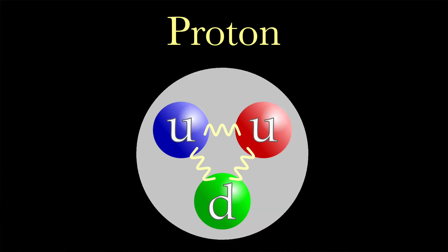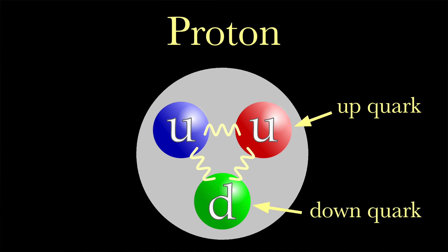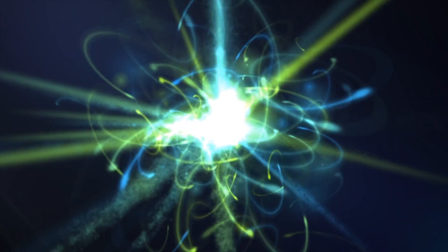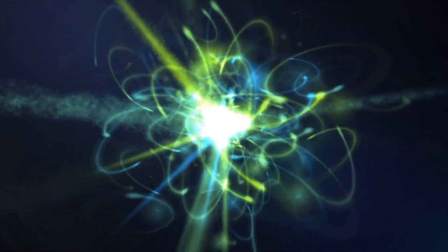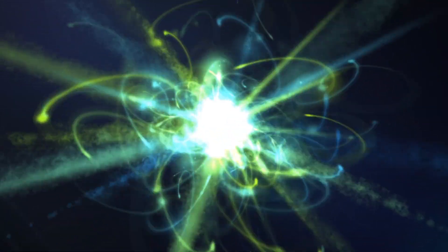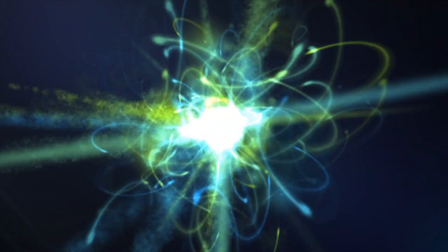Let's begin with hydrogen, the simplest atom, which consists of one proton and one electron. The proton is located in the atom's nucleus and is composed of two up quarks and one down quark. Quarks, like some other elementary particles, are strange because they don't have a defined size or shape.